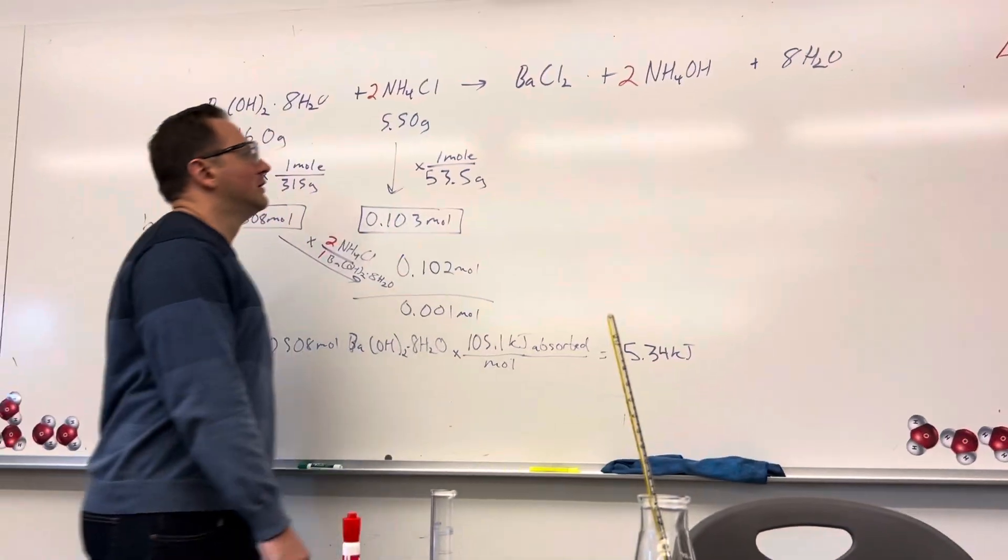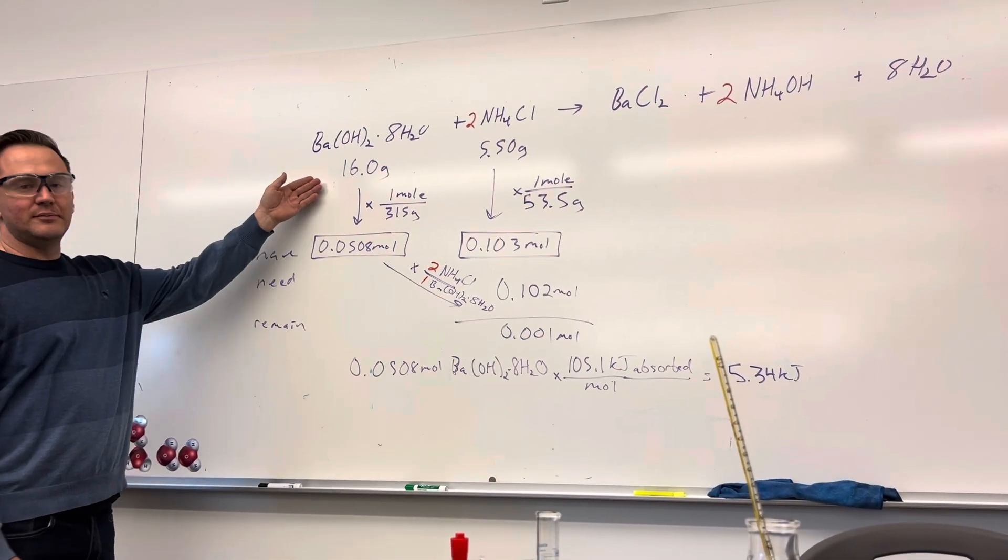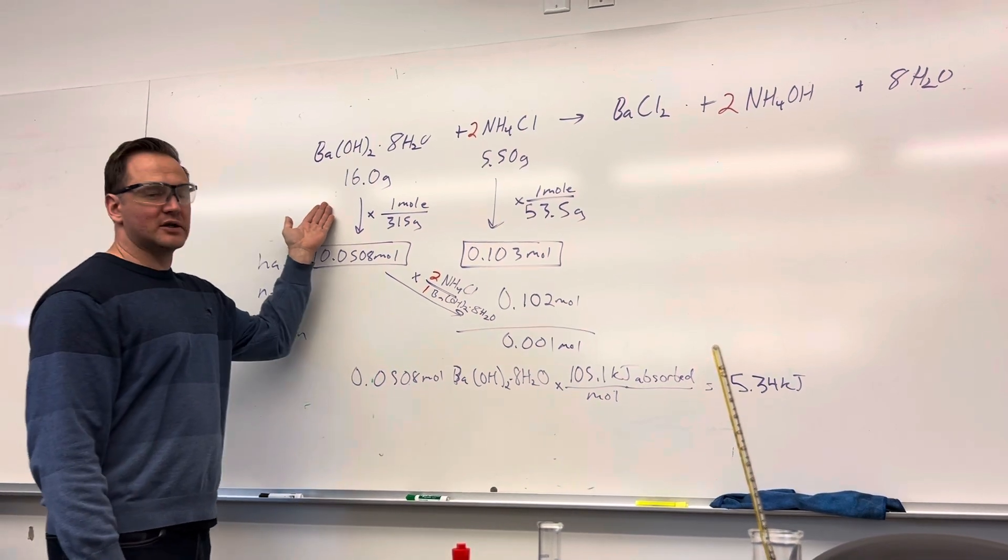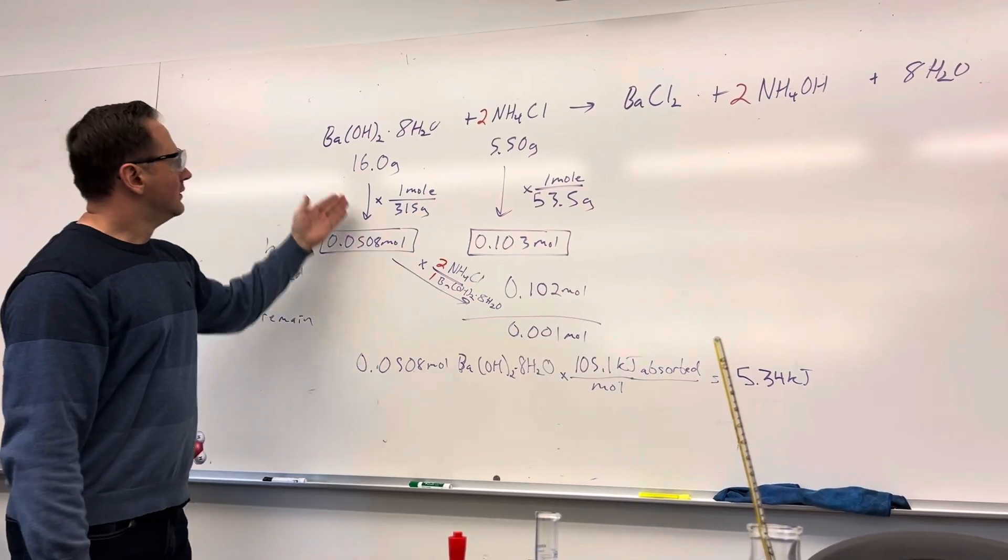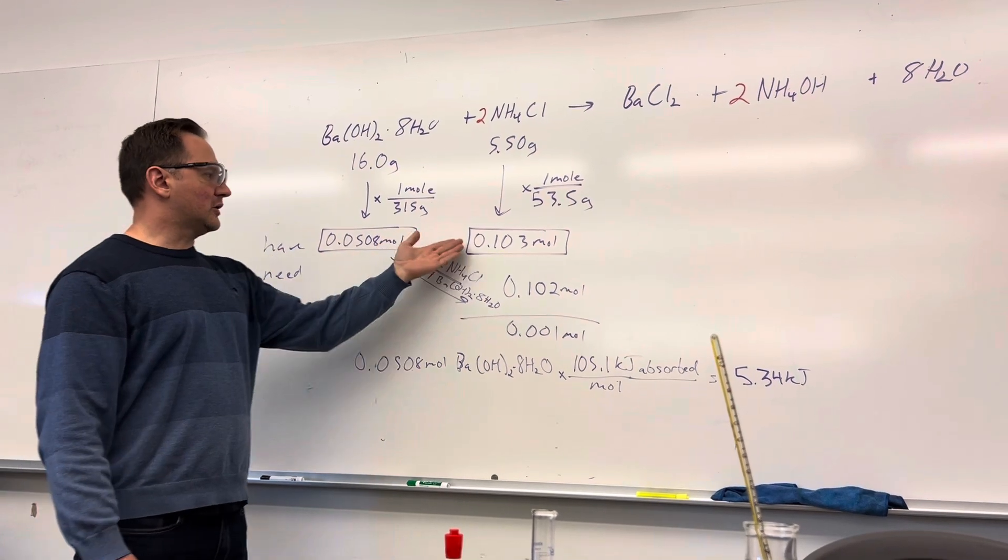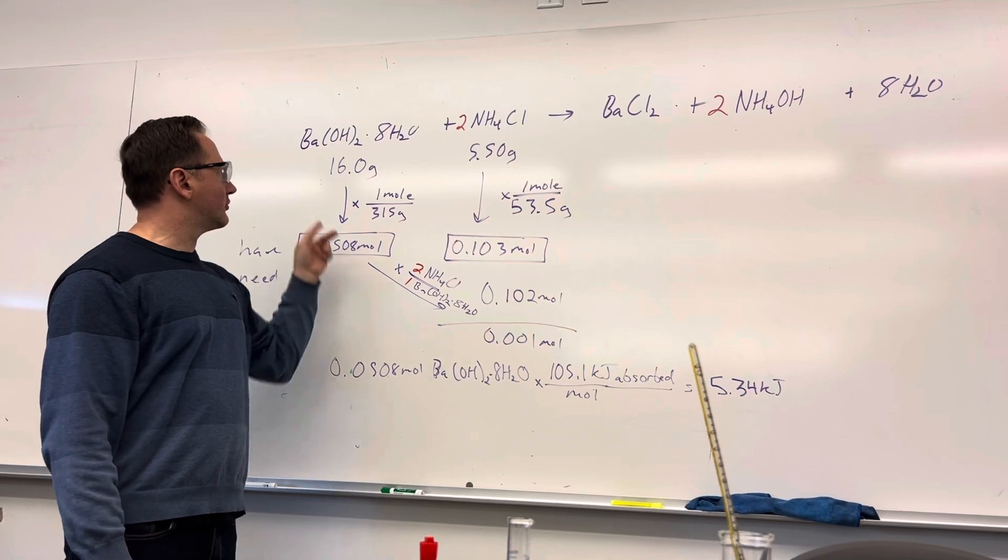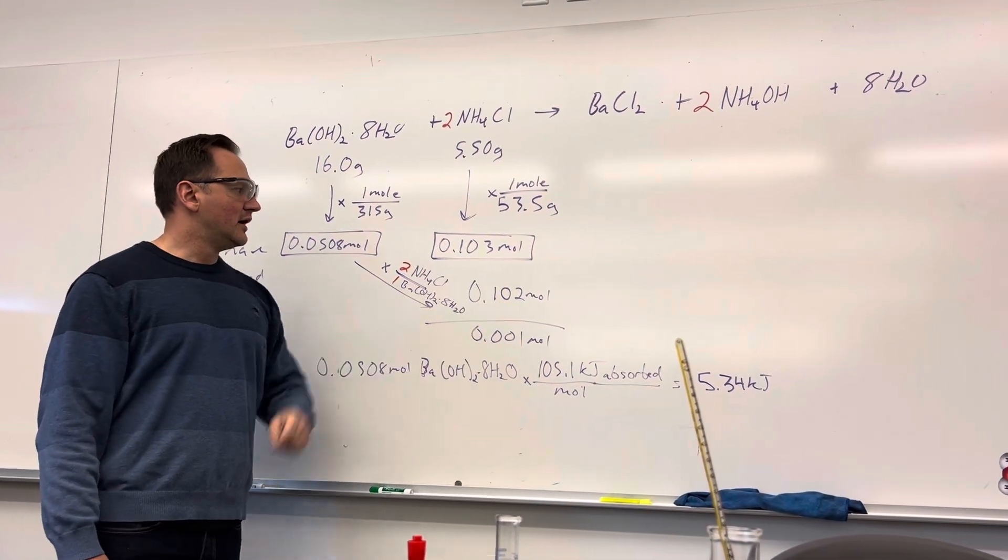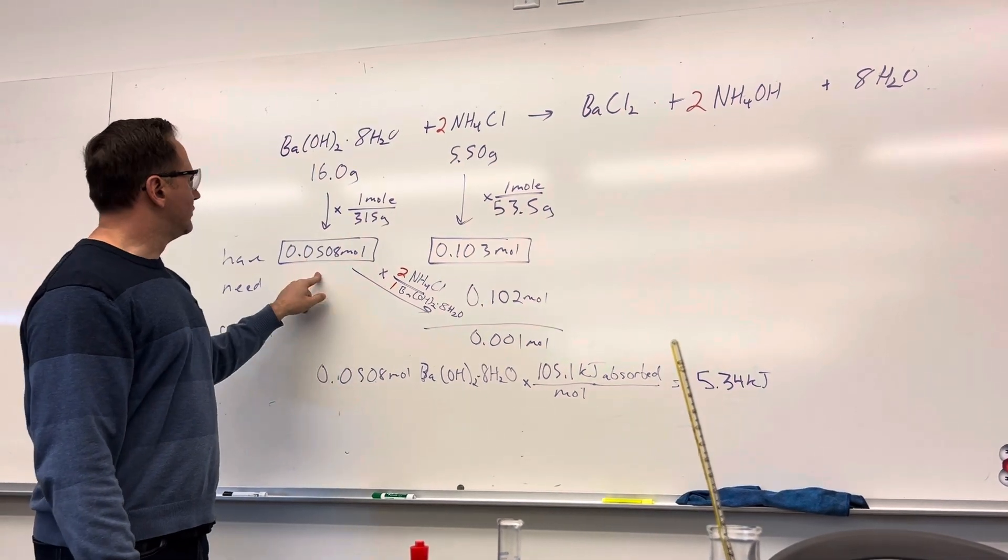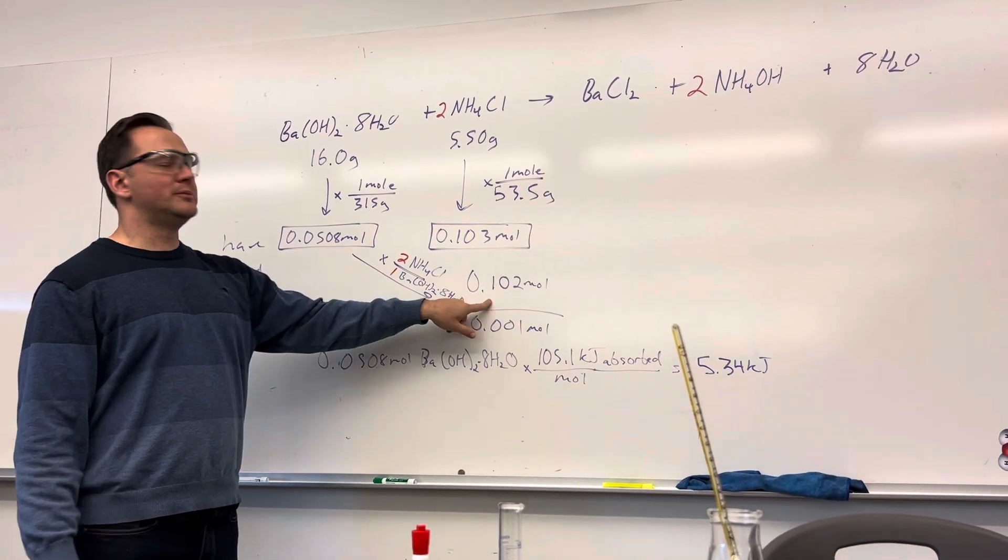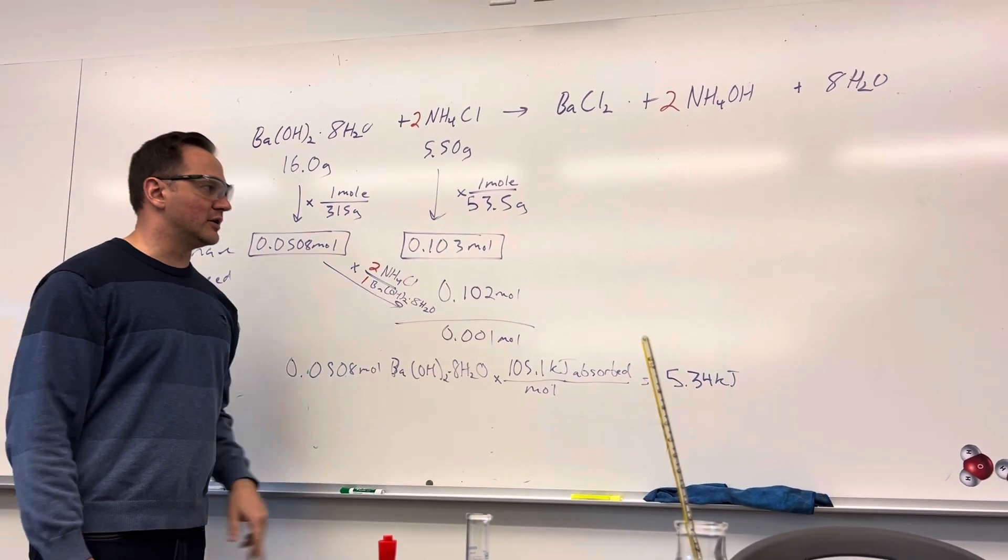Now to go through how we can relate this thermochemistry to stoichiometry, here's the reaction that we had. I mixed 16 grams of barium hydroxide octahydrate with 5.5 grams of ammonium chloride. Going to moles, we see that we get pretty much no excess reactant. We got 0.0508 moles of the barium hydroxide octahydrate and 0.103 moles of ammonium chloride. Since they react in a two to one ratio, if we use up all the barium hydroxide, we would need 0.102 moles of the ammonium chloride, which we have with very little left over.